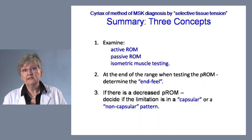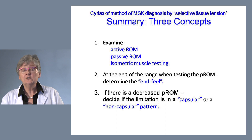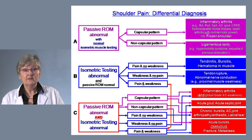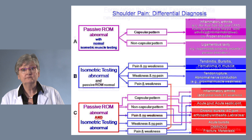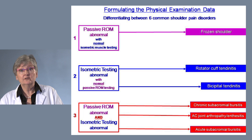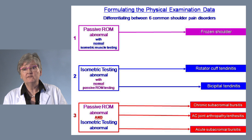In summary, there are three concepts for making a diagnosis using the Cyriax method of selective tissue tension. When examining, you must use active range of motion, passive range of motion, and isometric muscle testing. At the end of range on passive testing, determine the end feel. If passive range of motion is decreased, decide if the limitation follows a capsular or non-capsular pattern. By dividing findings into these three groups, you can organize the entire differential diagnosis — as demonstrated with the six common causes of shoulder pain. Thank you very much.